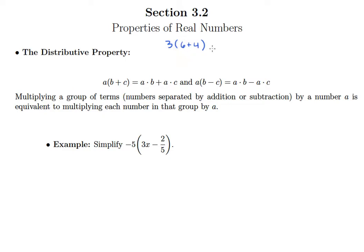Now, if we were ever encountered with this problem in the past, what we would say is, you know, six plus four needs to come first because it's in parentheses, so three times 10. And then, of course, three times 10 is 30.